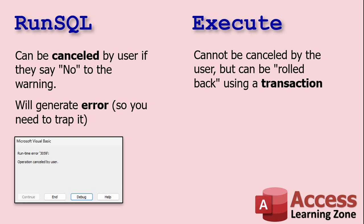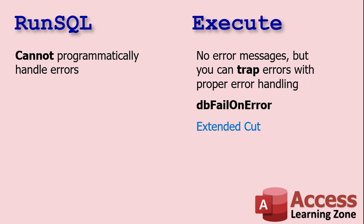The problem with RunSQL that I don't like is that it cannot programmatically handle errors. If an error happens during RunSQL and you've turned off the warnings with SetWarnings False, you won't see anything — not the nuisance warnings, not the errors, nothing. With Execute, you can trap errors using a parameter called DBFailOnError. If Execute runs and there are errors, you can use error handling to see what happened. I'll be talking about this more in the extended cut for members.